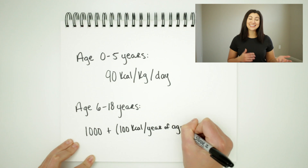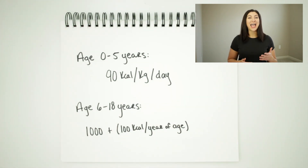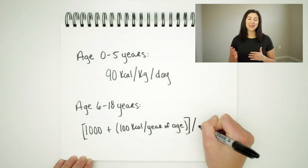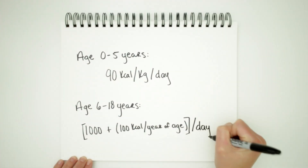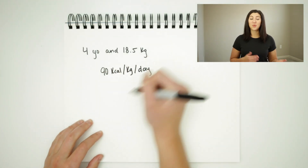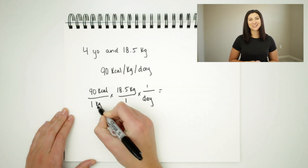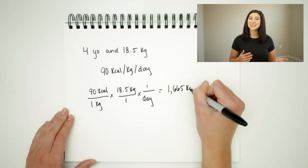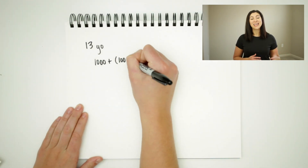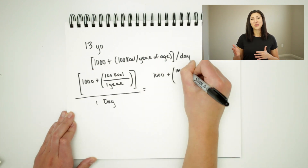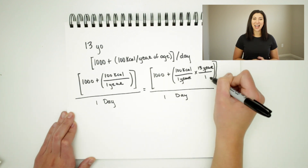If your patient is between six and 18 years old, you will add 1000 to 100 kilocalories times their age in years. If you work this out with me, you'll see that a four-year-old weighing 18.5 kilograms will need 1665 kilocalories per day. And if your patient is 13 years old, they will need 1000 plus 1300, which is 2300 calories a day.